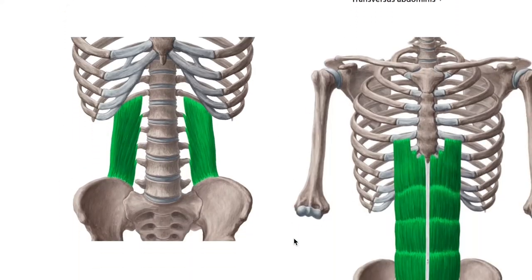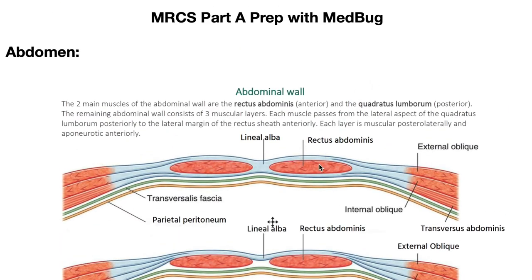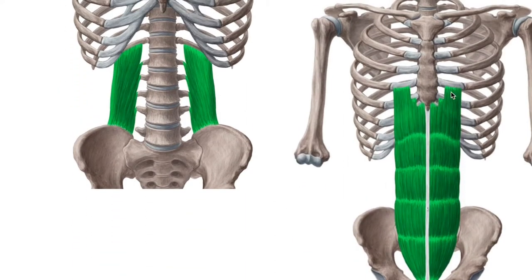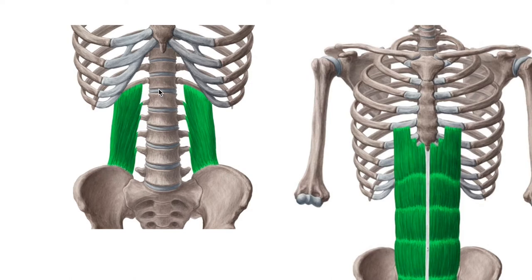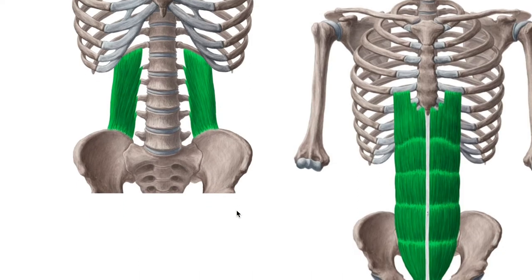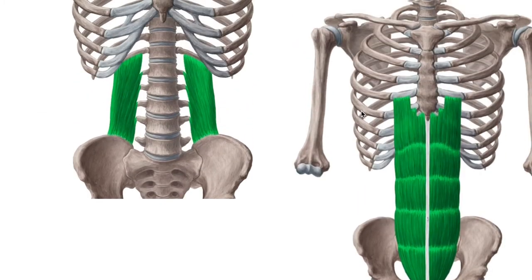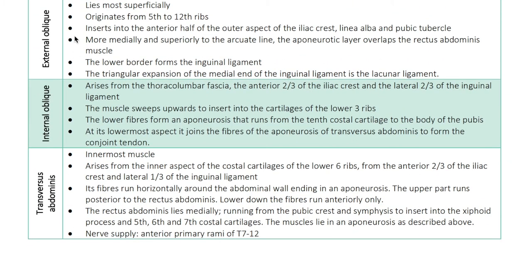Now let's look at these muscles in a vertical view. The rectus abdominis originates from the ribs and attaches to the pubic bone. The quadratus lumborum similarly originates from the ribs and vertebral bones and attaches to the pubic bone. Apart from these two, there are three muscles surrounding the abdomen: external oblique, internal oblique, and transversus abdominis.